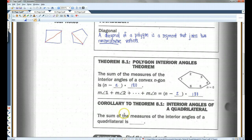All right, a corollary, the sum of the measures of the interior angles of a quadrilateral, remember quadrilateral has four sides, is 360. Any quadrilateral, if you add up all four angles, you get 360 degrees.